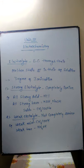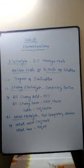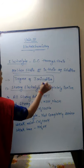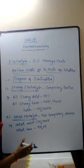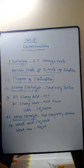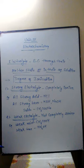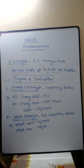So, electrolytes conduct electricity in their molten state or aqueous condition. When dissolved in solution, they give ions. On the basis of degree of ionization, electrolytes are classified into two types: strong electrolytes, which are completely ionized in aqueous conditions and have high electrical conductance due to large number of ions, and weak electrolytes, which are partially ionized with low electrical conductance. To summarize: substances classified by conductivity are conductor, insulator, and semiconductor; conductors are classified as metallic conductor and electrolytic conductor; and electrolytes are classified as strong electrolyte and weak electrolyte.